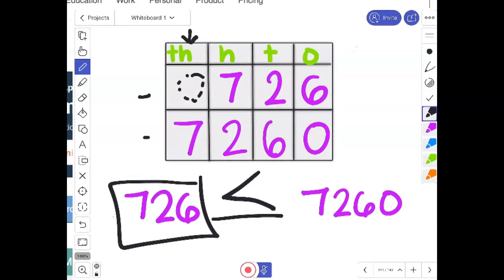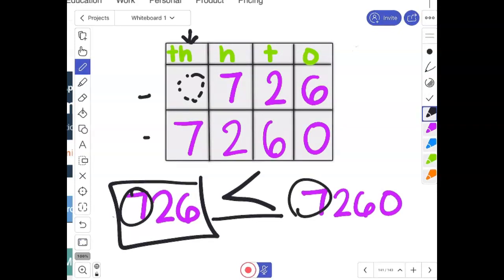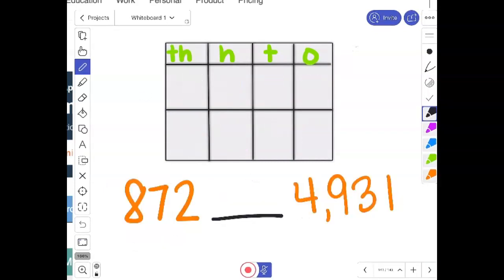I threw that one in there as a trick, right? Because if you just looked and you said seven and seven, you go, oh, those are equal, right? Are these numbers really equal? Do you want to have $726 or 7,260? I'll take 7,000 over 700 any day.